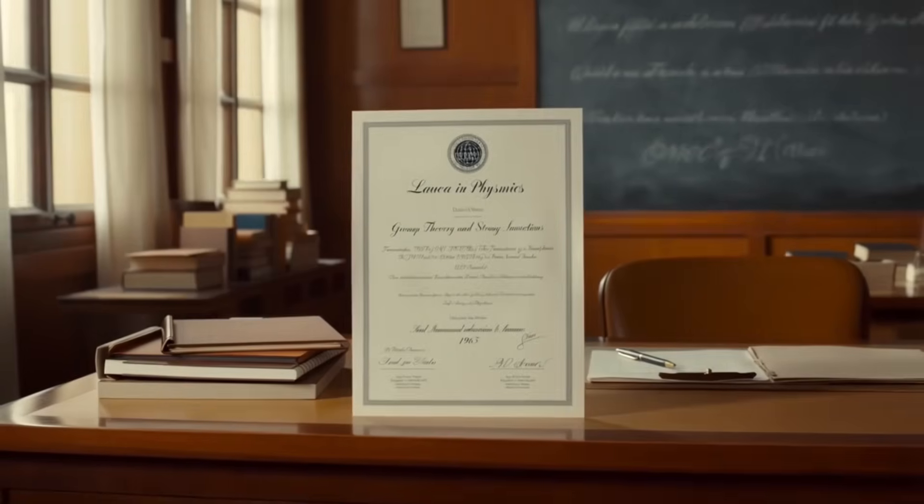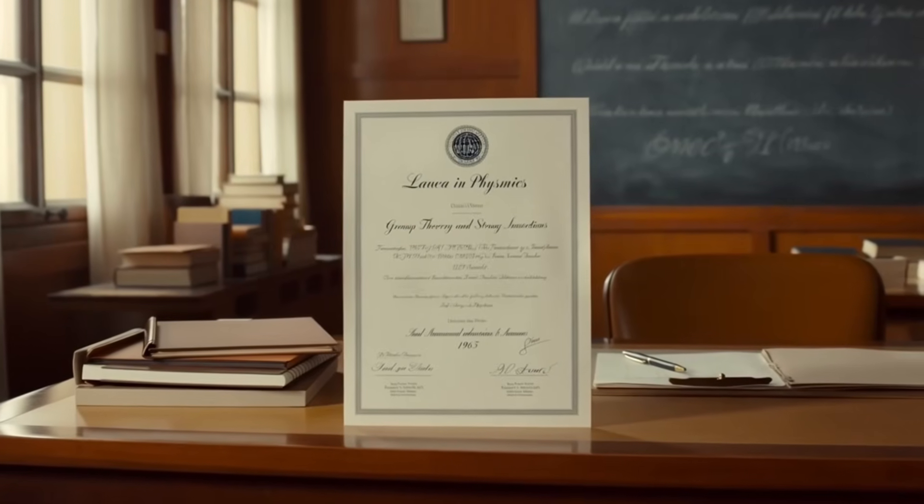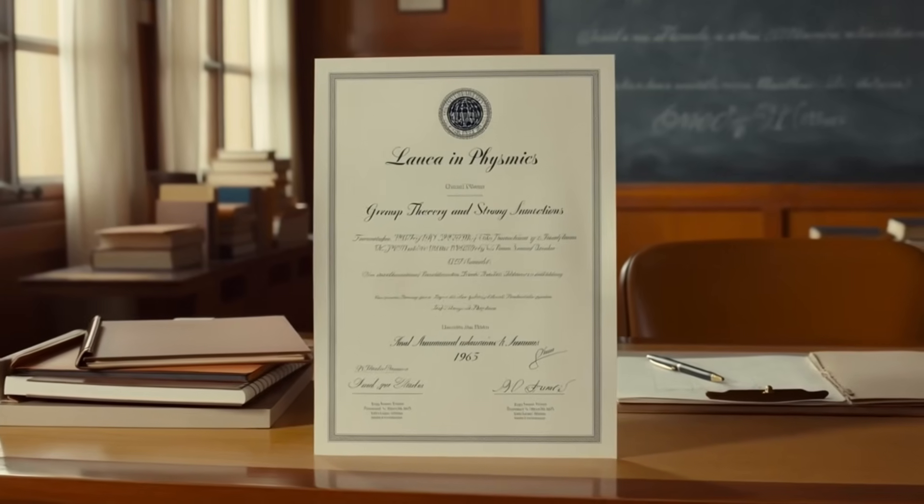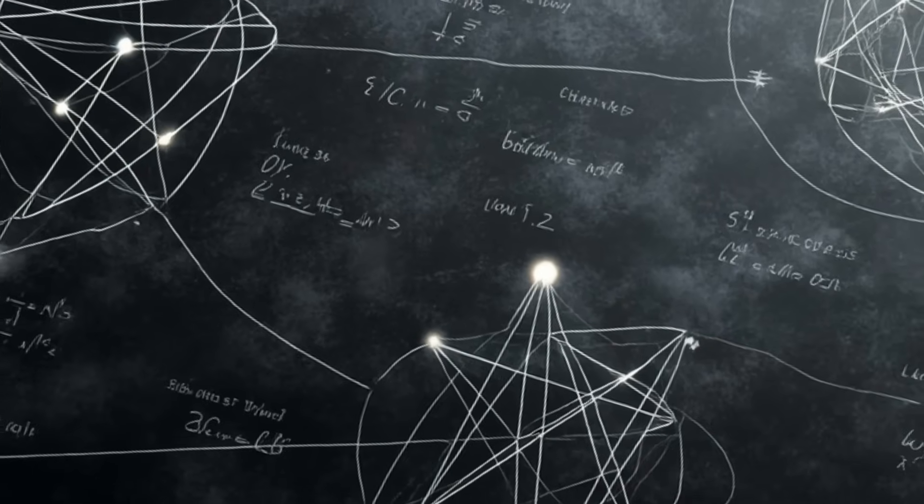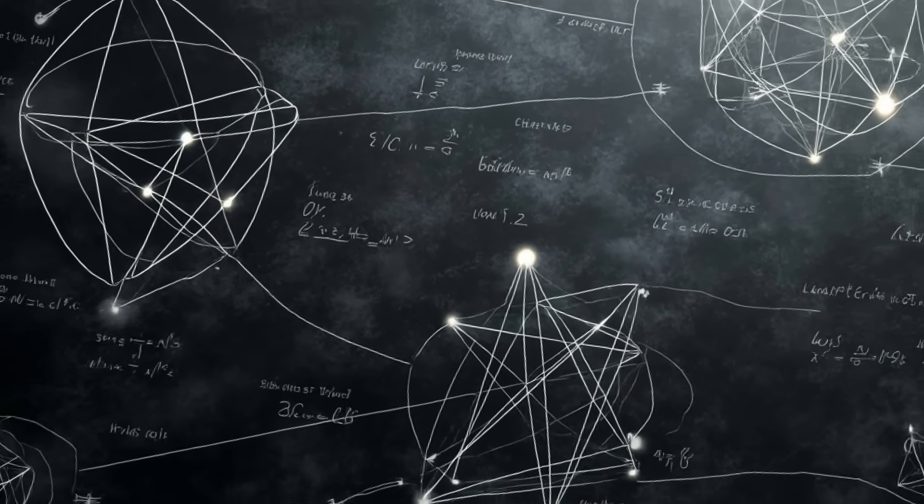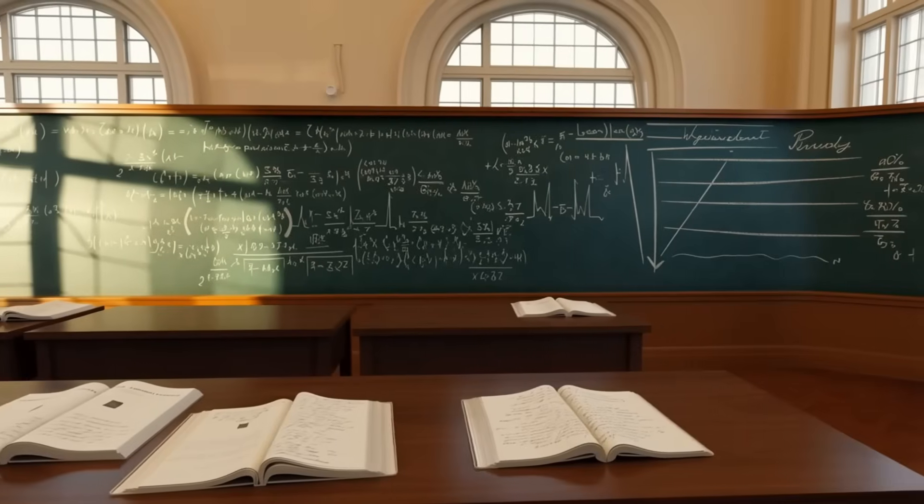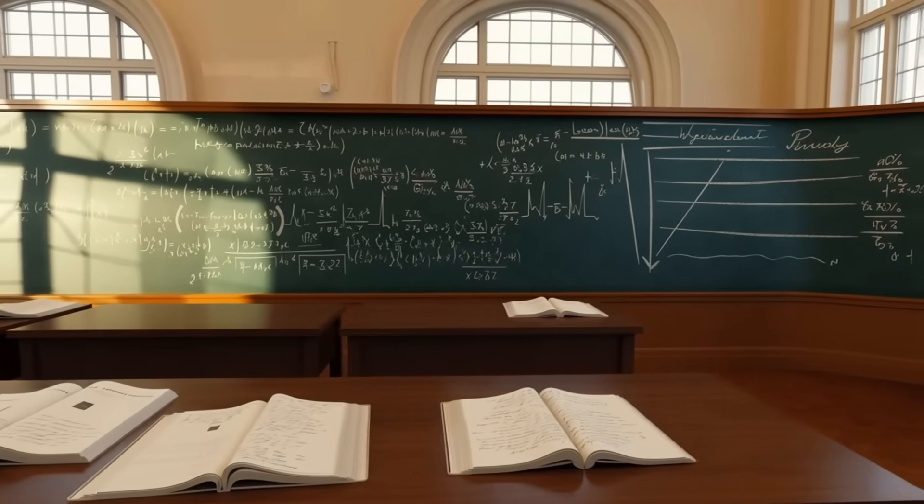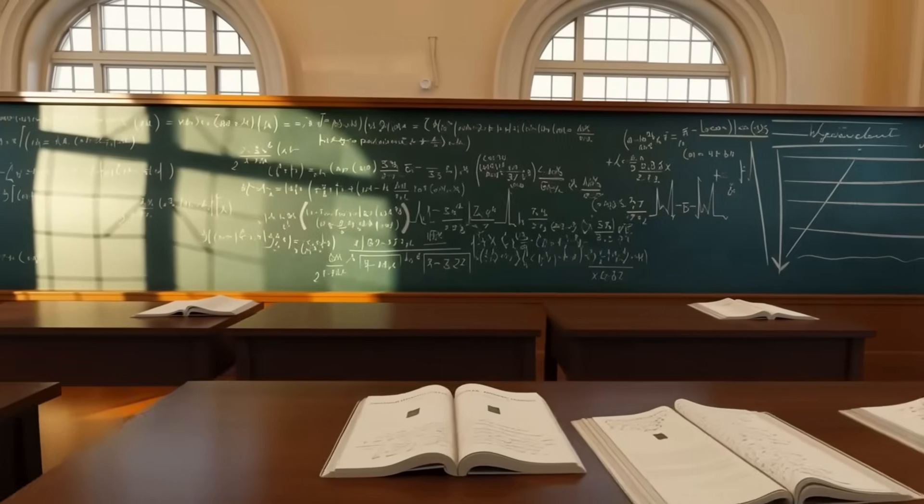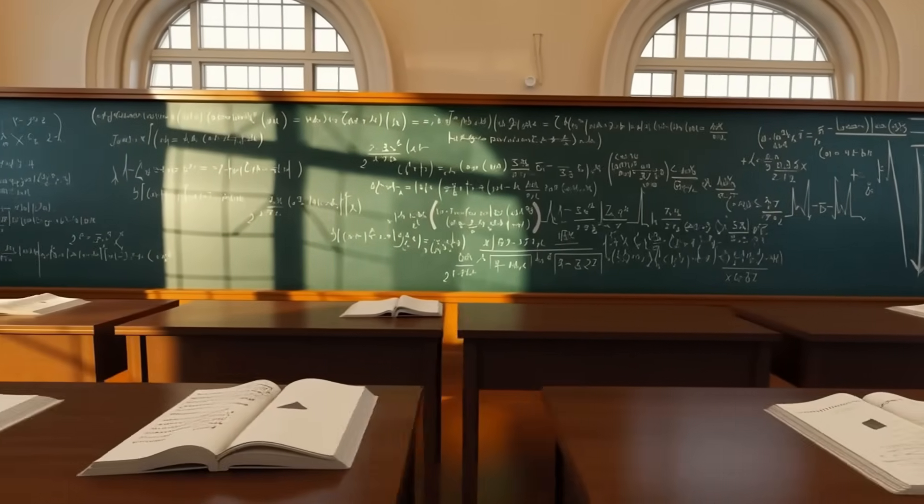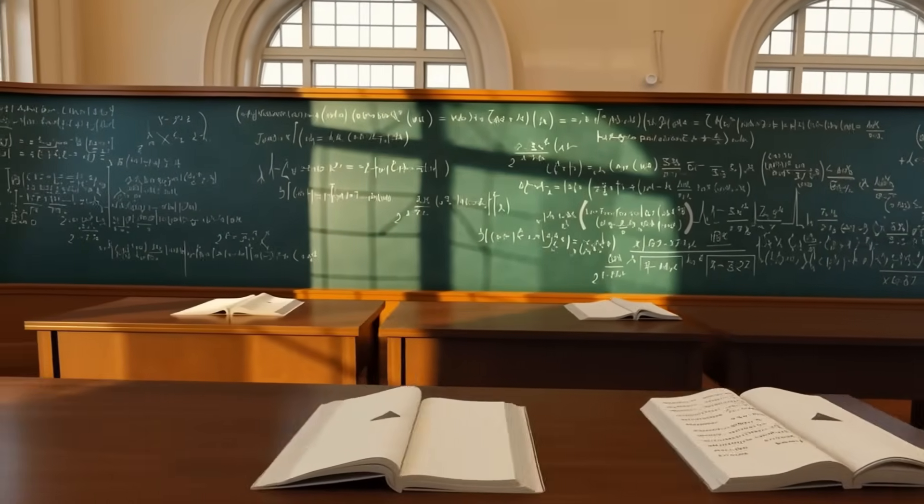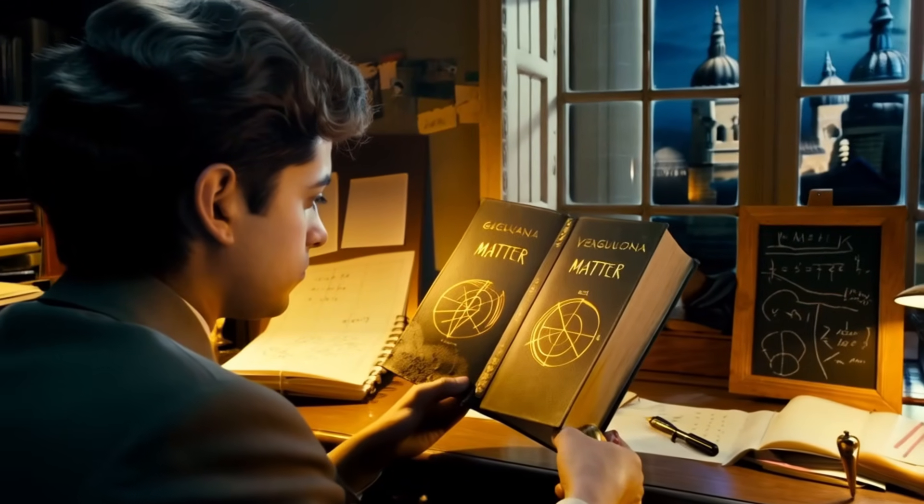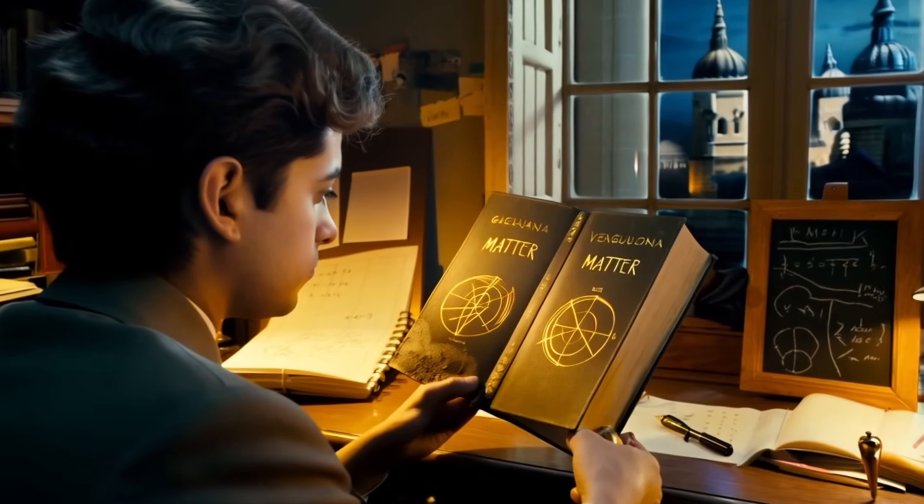In 1965, Veneziano earned his laureate in physics, completing a thesis on group theory and strong interactions, mathematical structures that hinted at unity beneath the chaos of subatomic particles. It was a time of revolution in physics. Quantum mechanics and relativity had reshaped science, but the strong force, the glue of matter itself, remained a mystery. And in Florence, a young physicist had begun his lifelong journey to find the equation that could explain it all.